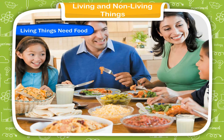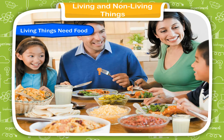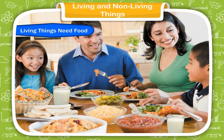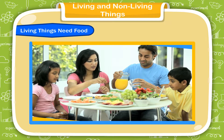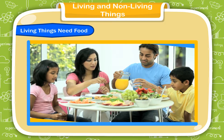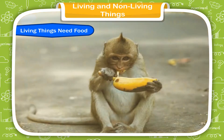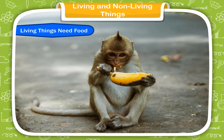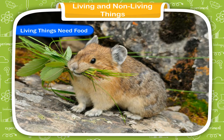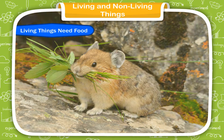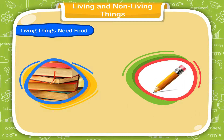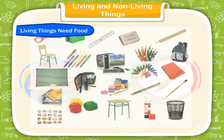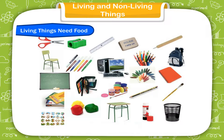Living things need food. Living things cannot survive without food. If they do not get food for a very long time, they will die. Food helps all living things to grow and live. Food also gives us energy needed to work and play. Like us, animals and plants also need food to stay alive. Animals get their food from plants and other animals. Plants make food for themselves with the help of air, water and sunlight. Non-living things do not need food because they are lifeless.